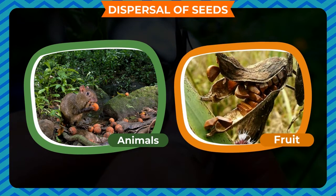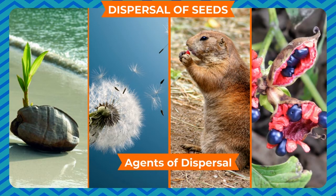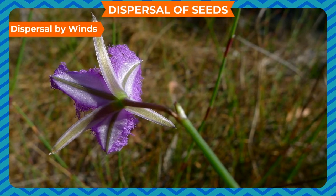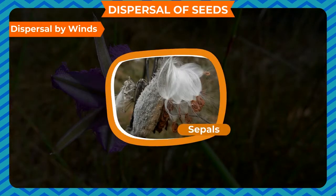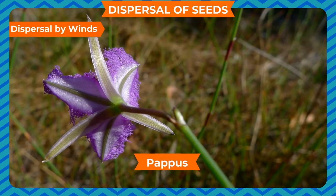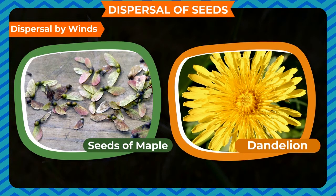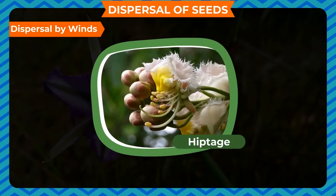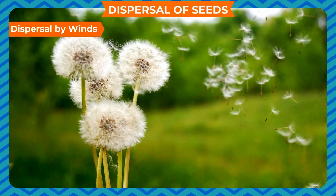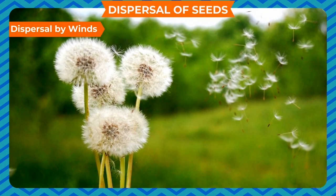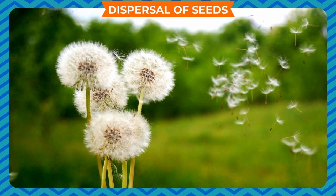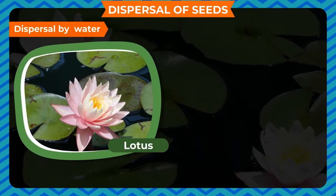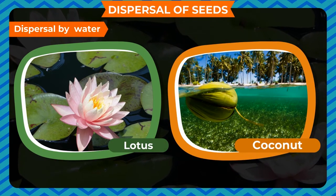Seed dispersal can happen through mainly four ways: through water, wind, animals, and explosion of the fruit. These are known as agents of dispersal. Dispersal by wind: some seeds have hair-like structures called pappus. Seeds of maple, dandelion, drumstick, madar, and hiptage have wing-like projections. These pappus or wings help the seeds to float in the wind.